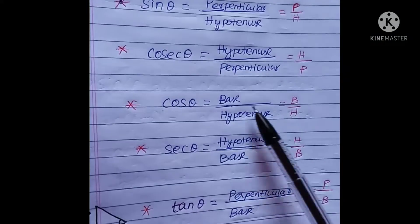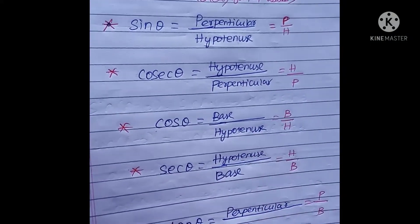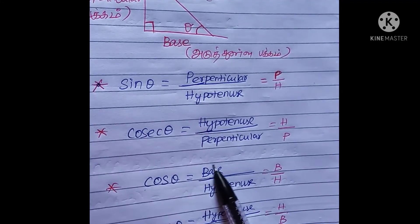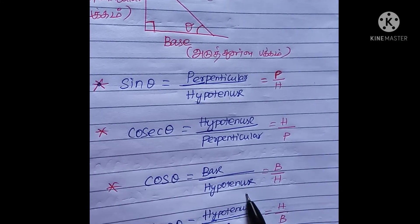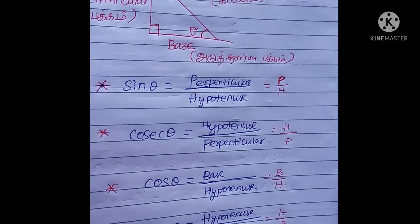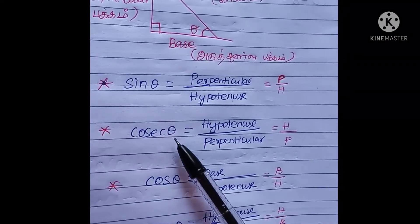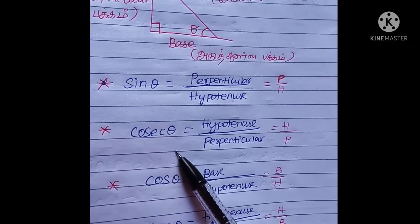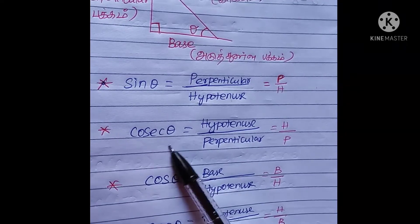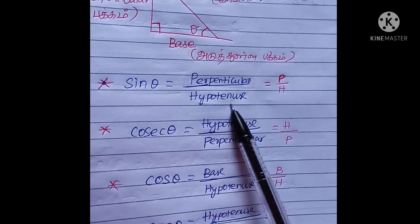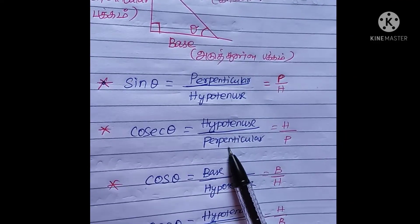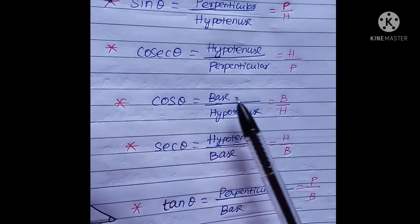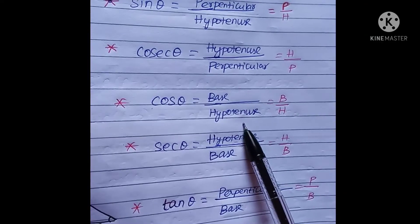Cos theta is the base. So cos is base divided by hypotenuse. Now sin theta — cosec theta is hypotenuse divided by perpendicular. Cos theta is base divided by hypotenuse.